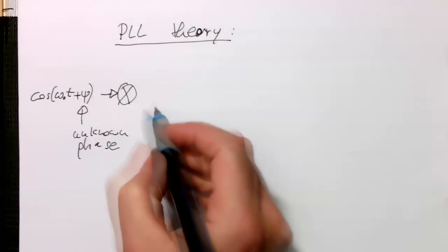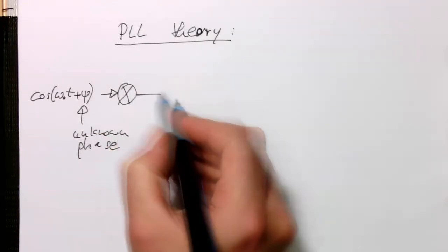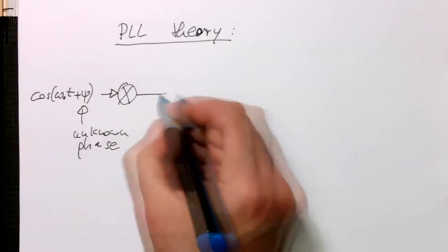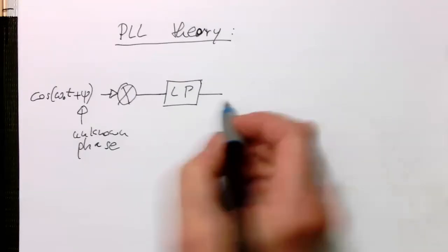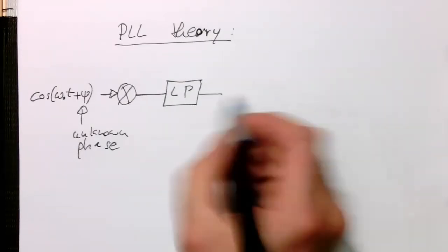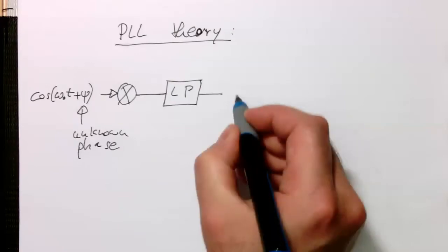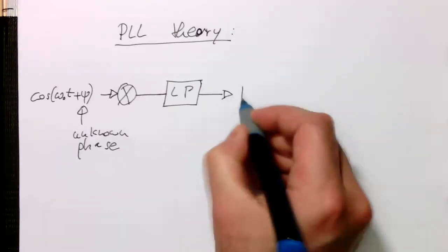So in this case we just assume we know the frequency of the carrier but we don't know the phase. So at the end we're going to do phase demodulation, so we are interested in the phase. And then we've got our low-pass filter here and then the low-pass filter drives our VCO.